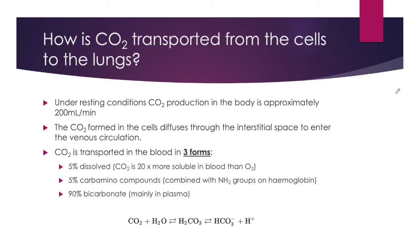How is CO2 transported from the cells to the lungs? Under resting conditions, CO2 production in the body is approximately 200mL per minute. The CO2 formed in the cells diffuses through the interstitial space into the venous circulation.